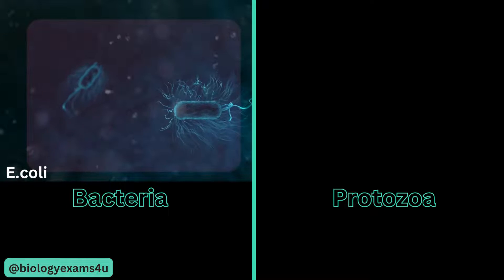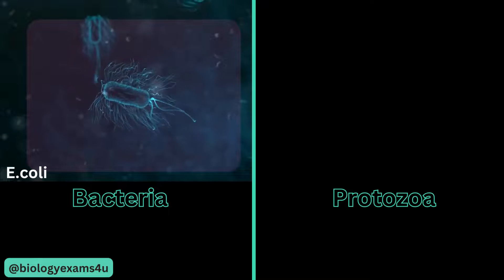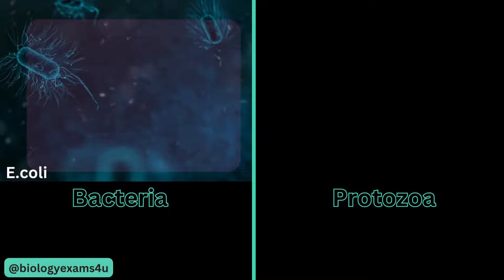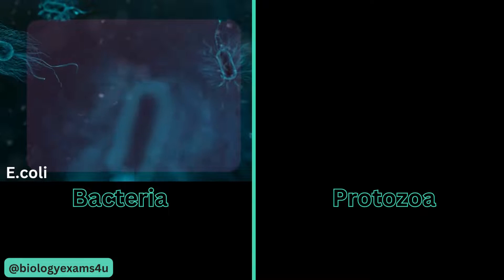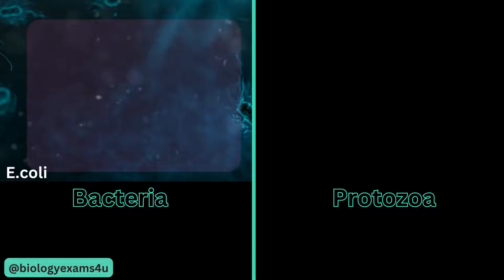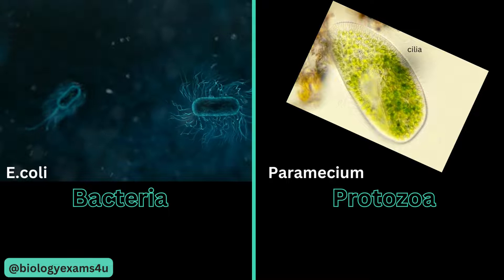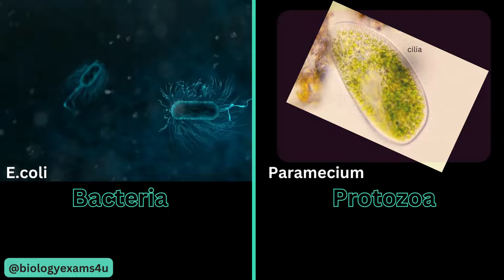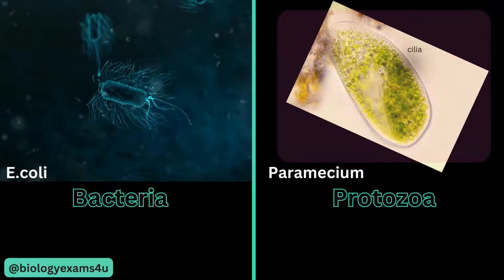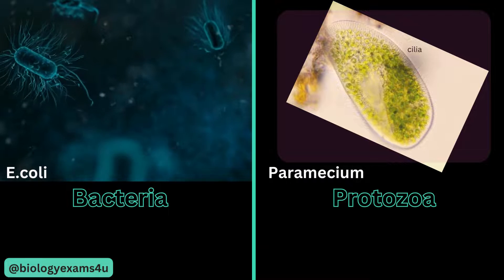This is E. coli, or Escherichia coli, the most extensively studied microorganism. It has been a model system for the study of bacterial metabolism, cell division, cell replication, bacterial genetics, and we are even synthesizing recombinant proteins inside this bacterium. And this is Paramecium, a well-known model organism of the ciliate group, widespread in freshwater, brackish water, or marine environments.